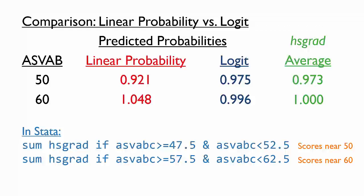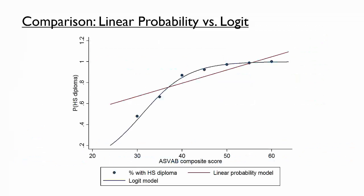We can also see this graphically by repeating both the predictions and the averages for more values of the ASVAB score. The dots represent the proportion of individuals with a high school diploma for a variety of ASVAB composite scores. The pattern is clearly non-linear, and the logit model predictions fit the pattern much better than the linear probability model. While a logit model is not guaranteed to produce more accurate predictions, we have seen that it avoids predictions that do not make sense for a probability model.